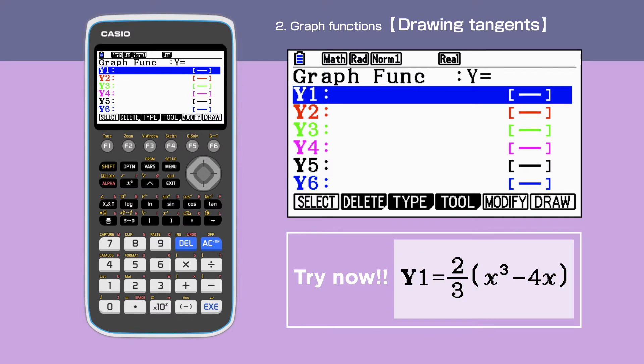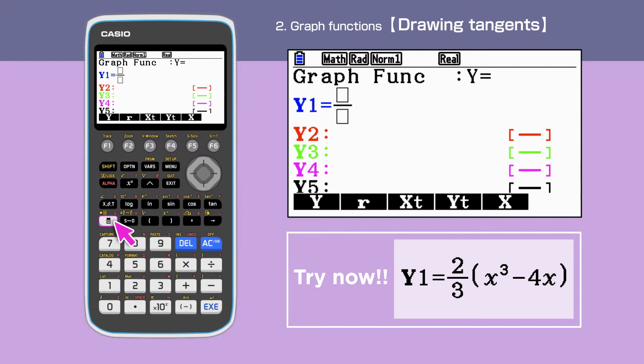First, we will draw a tangent to a graph. Check that the Graph Function shows y equals, then enter the equation y equals 2 over 3 bracket x cubed minus 4x in y1. In order to enter x cubed, we press x followed by the circumference key, also known as a caret symbol or hat symbol.